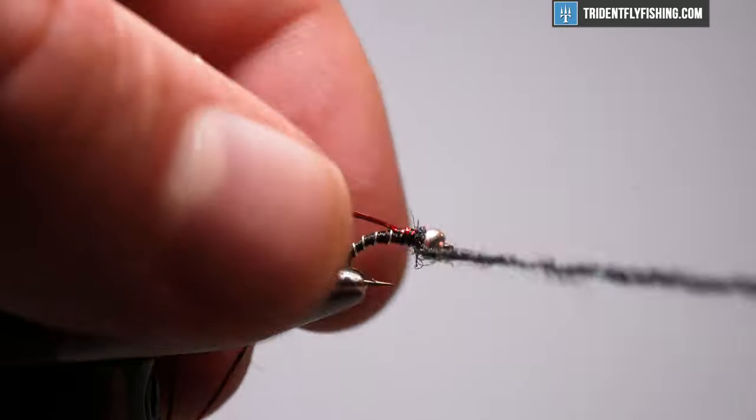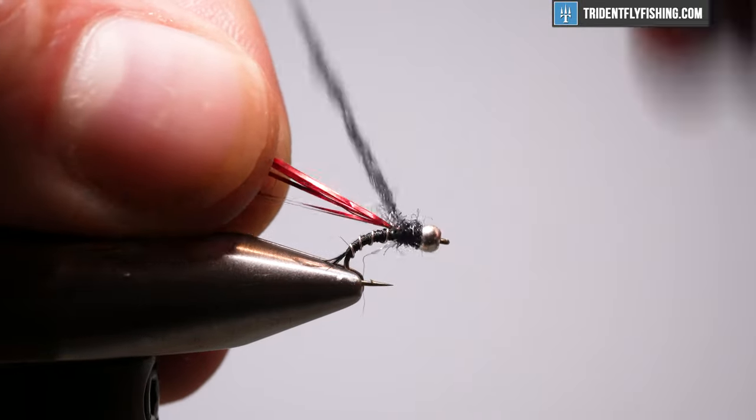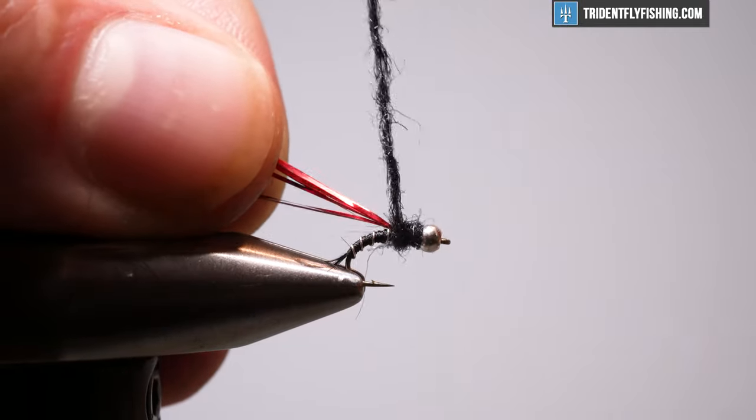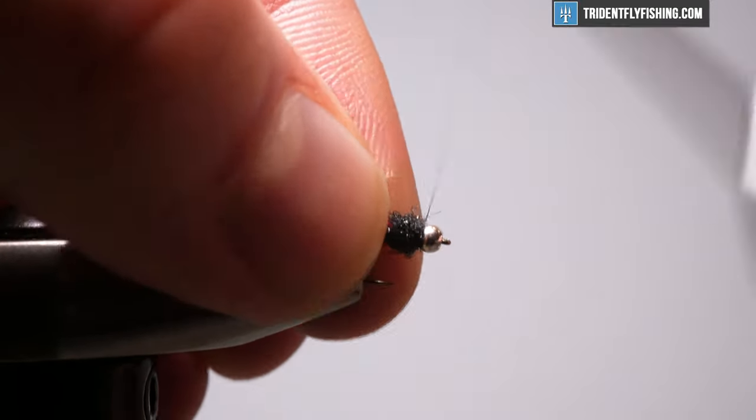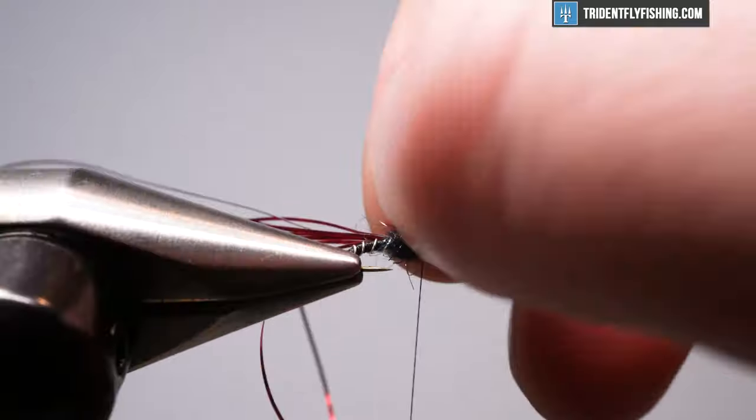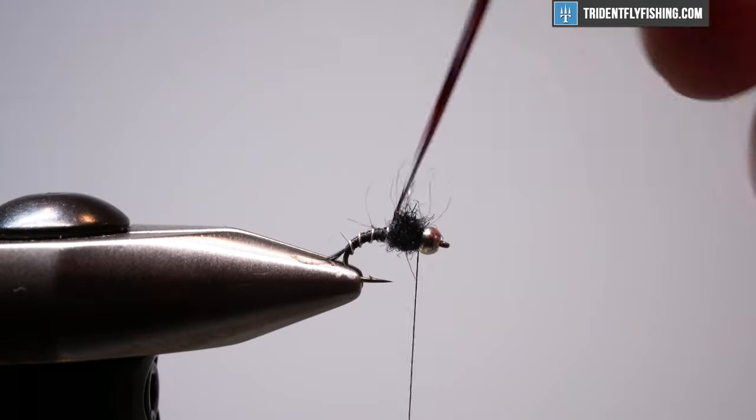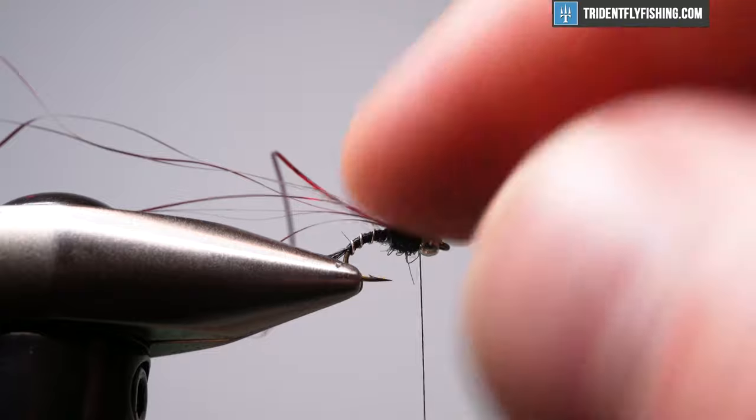And just get this going. Noodle's too long. Okay. There it is. We want this pretty round. That might be a little dense, but we'll roll with it. Yeah, it's fine.